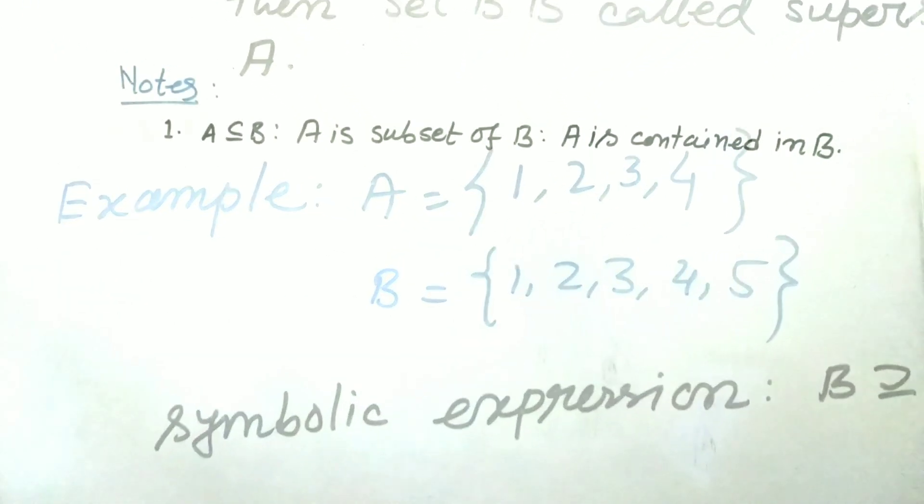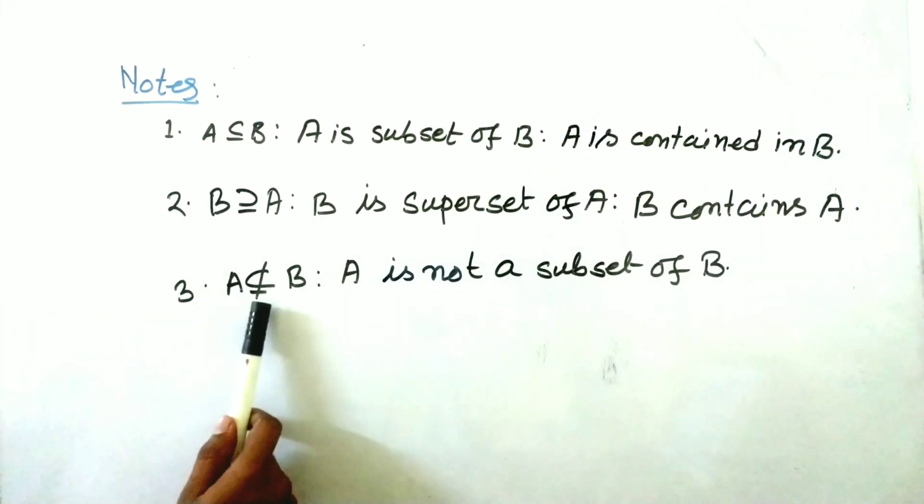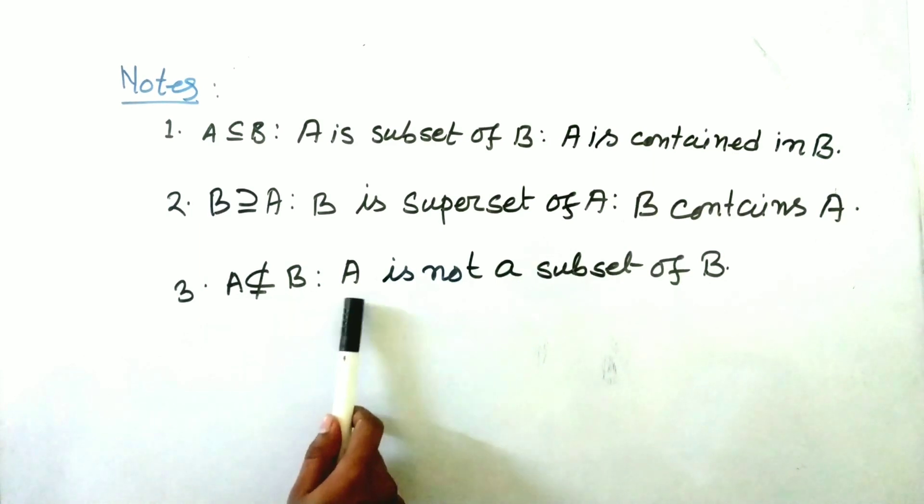Let's go for some notes. Number 1, A is subset of B means A is contained in B. Number 2, B is superset of A that means B contains A. Number 3, A subset not equal to B means A is not a subset of B.